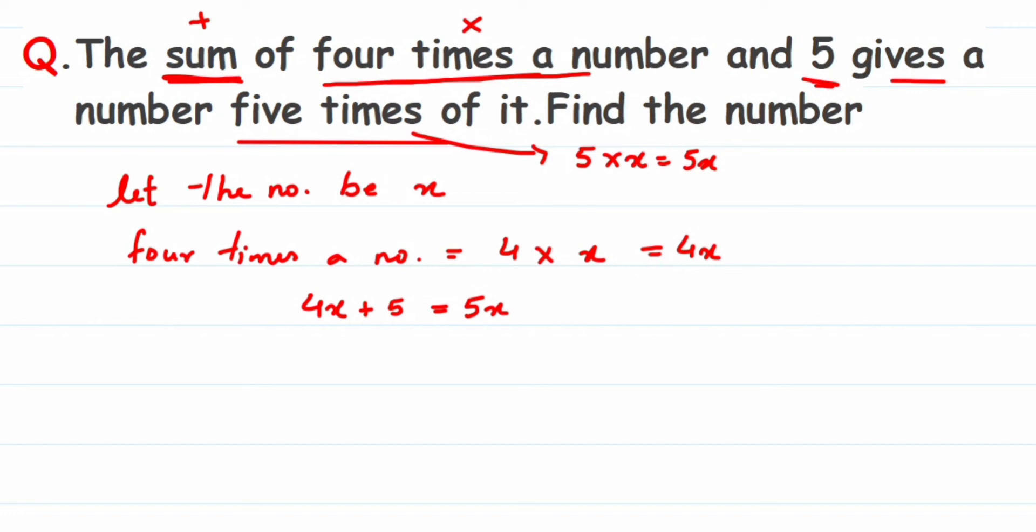Here I'm going to transpose this 4x to the other side and keep this 5 on this side. So here we'll get 5 equals 5x minus 4x. Now since this 4x is an addition, the sign here is positive - it's not given, but if the sign is not given it's a positive sign. When it transposes to the other side, it becomes negative.